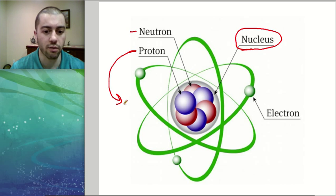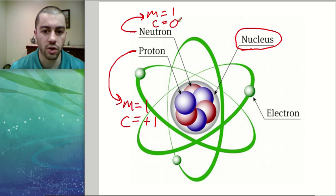The protons have a mass of one unit and a charge of positive one units. The neutrons on the other hand have a mass of one unit but a charge of zero units. So neutrons are neutral.